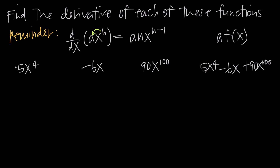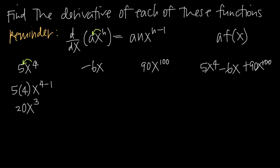Let's look at what that looks like for the first function. We identify a constant coefficient of 5 and an exponent of 4. That exponent of 4 comes down in front and gets multiplied by 5, giving us 5 times 4, and then x to the 4 minus 1. When we simplify, we get 20x to the 3rd. So 20x³ is the derivative of 5x⁴.